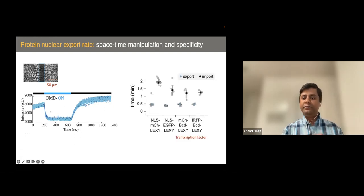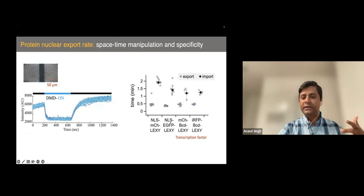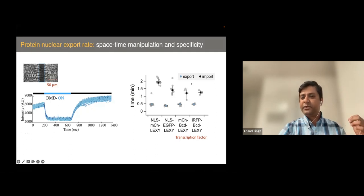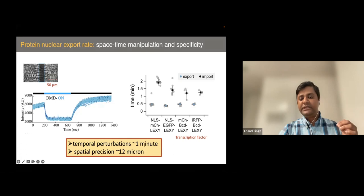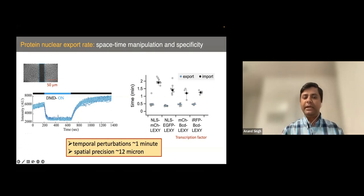We quantified how these dynamic parameters look. One key detail is the export rate - when you turn on the blue light, the export rate for all proteins tagged with Lexi, whether dummy proteins or certain transcription factors, shows export kinetics of roughly around half a minute. The import kinetics depends on protein size and the import kinetics of other responsible proteins. What we have is a system where we can achieve spatial and temporal perturbations on a scale of minutes and tens of microns, which allows us to interrogate how these transcriptional networks are connected in time.